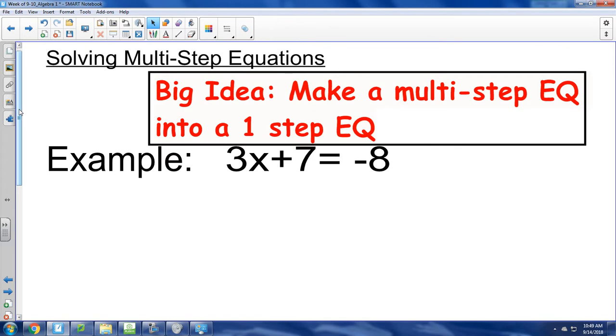Okay, so today we're going to solve a multi-step by turning it into a one-step. Today you can write the date here for us, this is 2018, it's September 14th. So we are working on this and we're looking at this first example. We're saying how can I make this equation into a one-step equation?